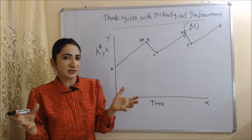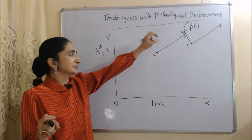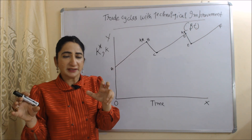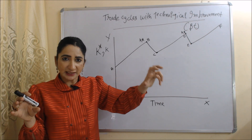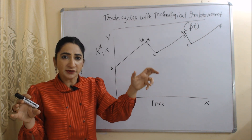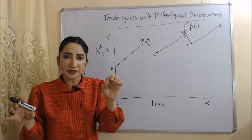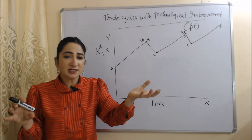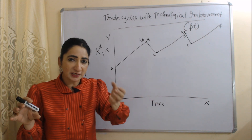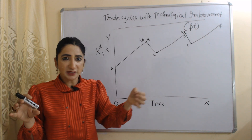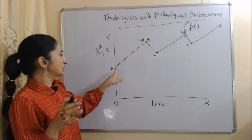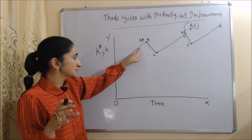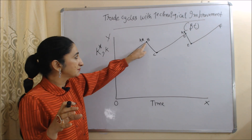Now we are going to talk about trade cycles with technological improvement — that is, trade cycles with β(t). With technological improvement, the expansion period of the trade cycle increases and the contraction period falls. According to Goodwin, technological improvement is very important because with it, expansion period increases and contraction period falls. In this diagram, A to B is our expansion period.